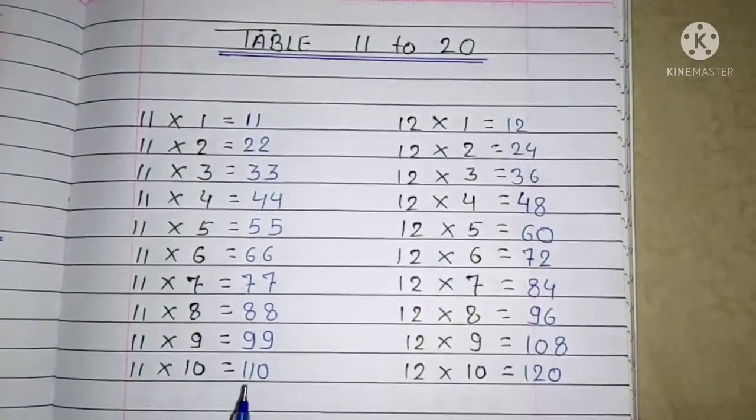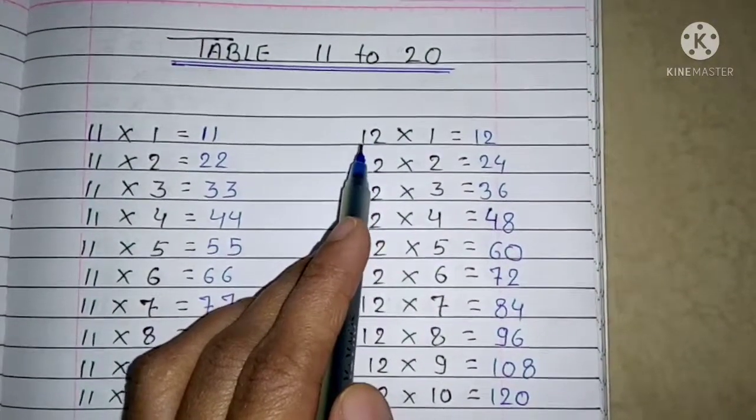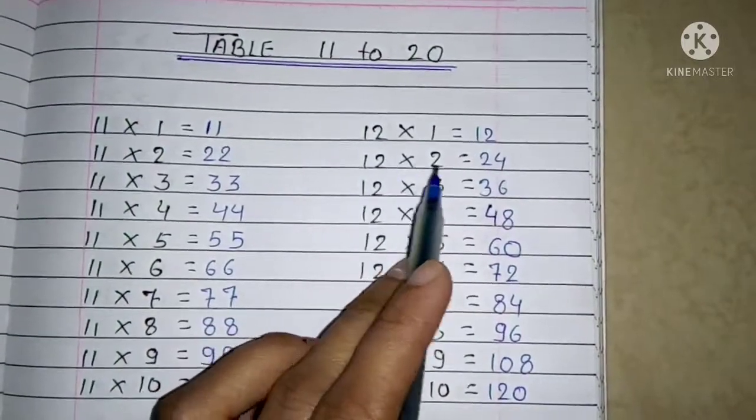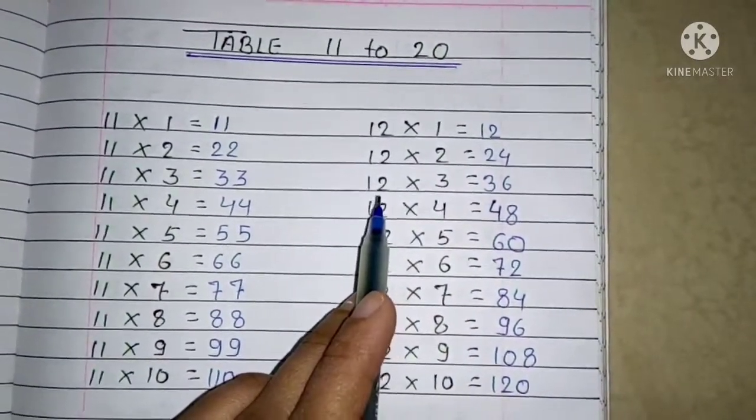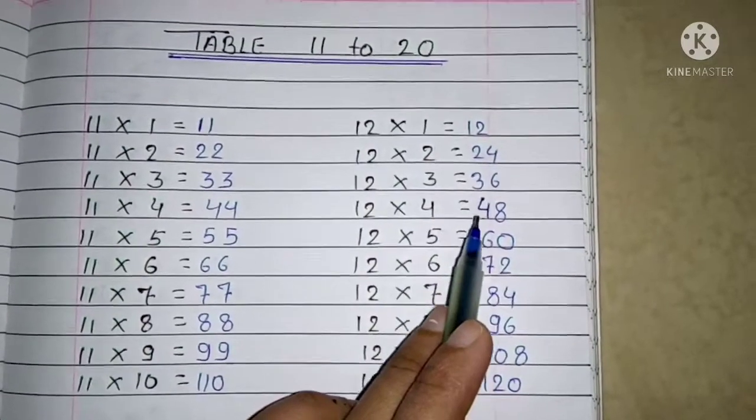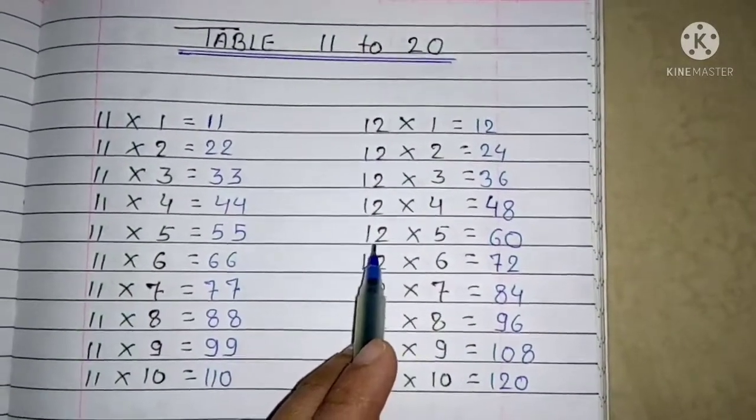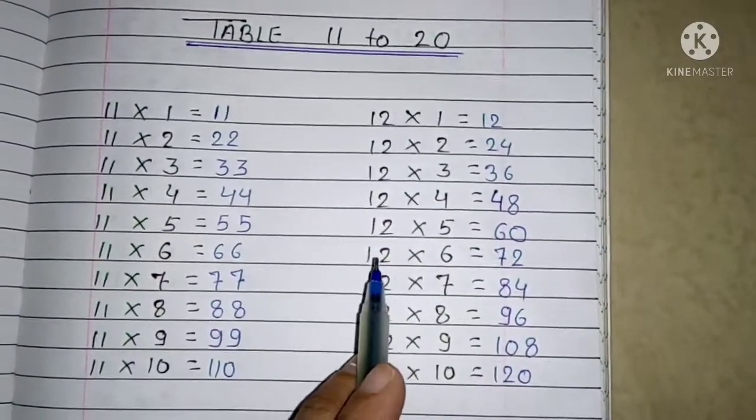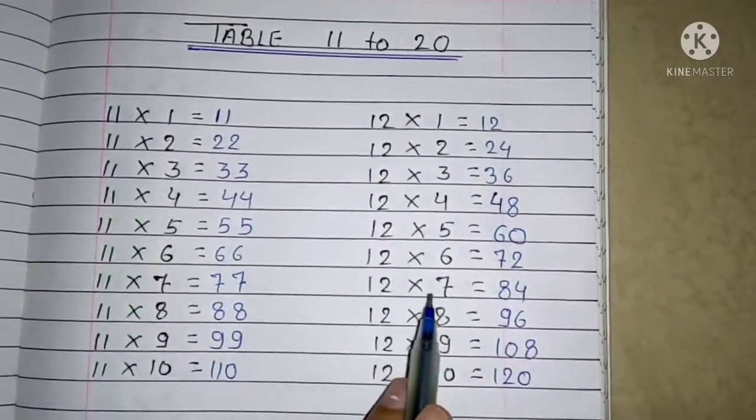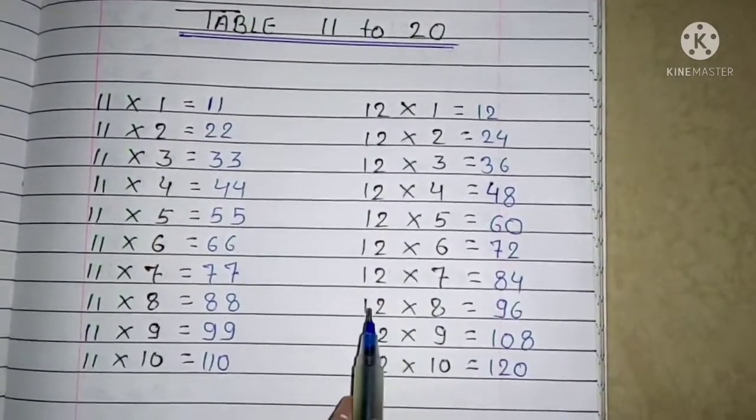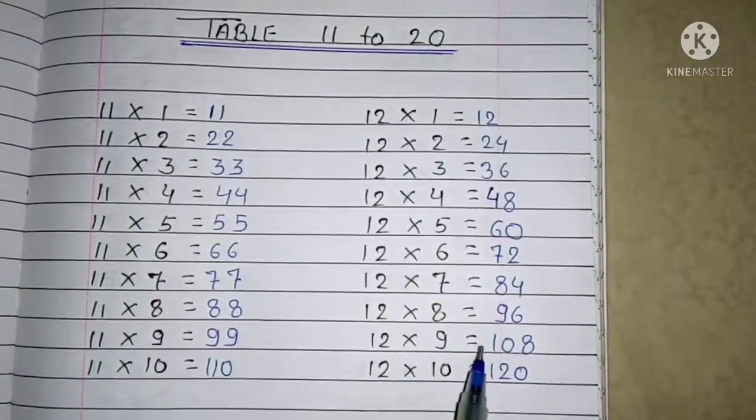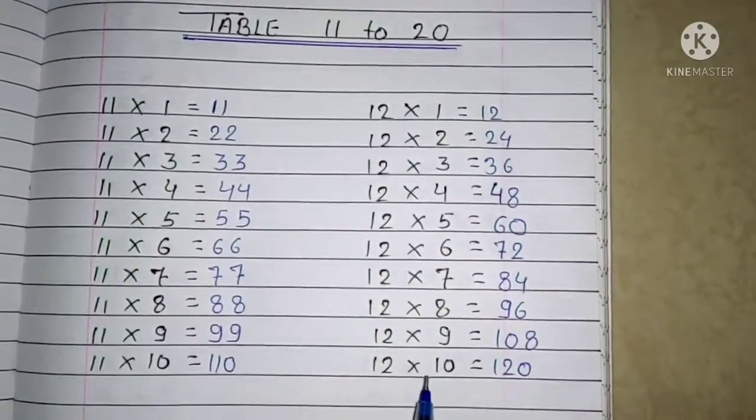11 times 10 is 110. Next table 12: 12 ones are 12, 12 twos are 24, 12 threes are 36, 12 fours are 48, 12 fives are 60, 12 sixes are 72, 12 sevens are 84, 12 eights are 96, 12 nines are 108, 12 tens are 120.